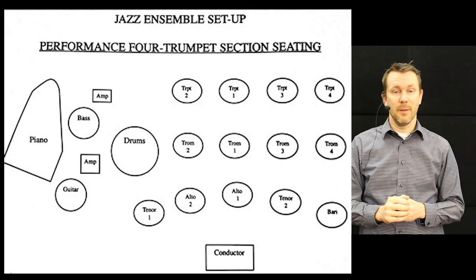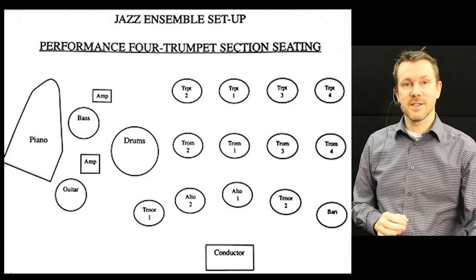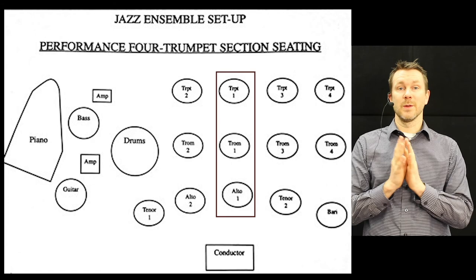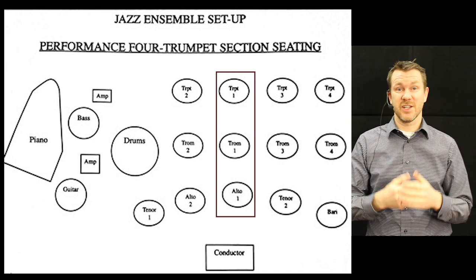Some of you might sit differently in your band, but this is a pretty standard seating for any modern big band. As you can see on the screen, lead alto is lined up directly in front of lead trumpet and lead trombone. This allows the lead alto to follow lead trumpet better. When they all play melodies and rhythms together, for example, in the shout section,